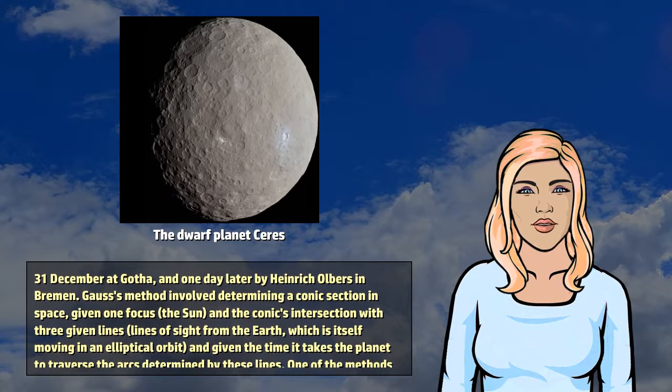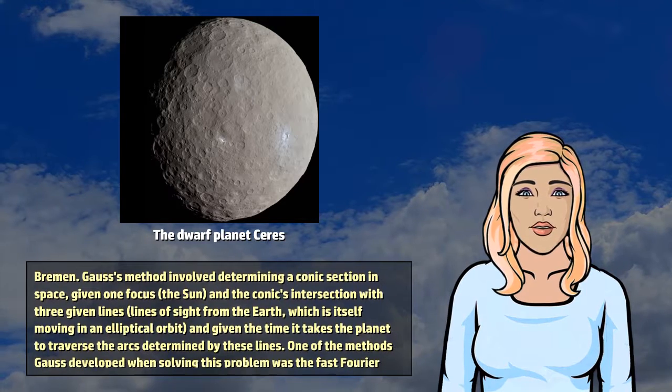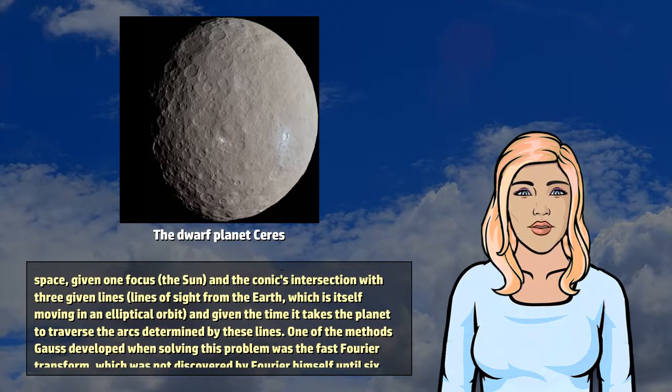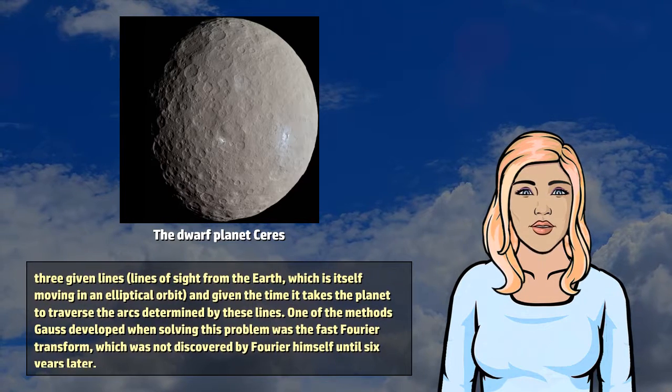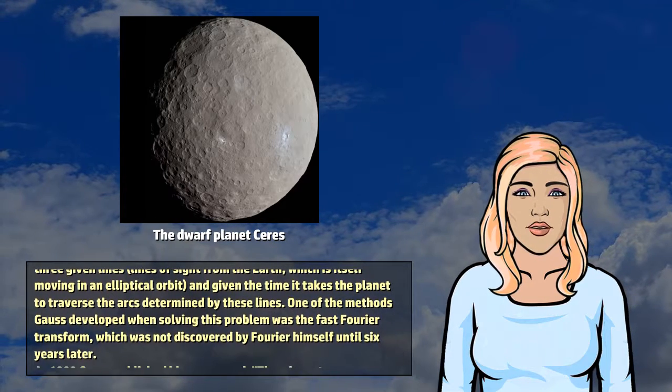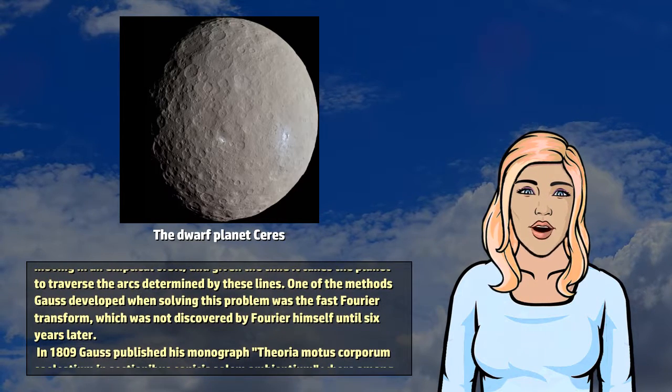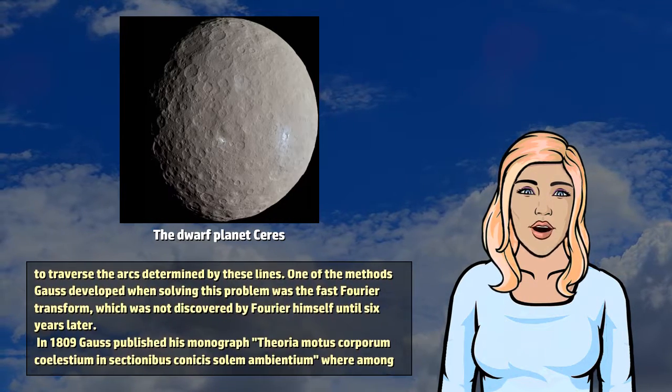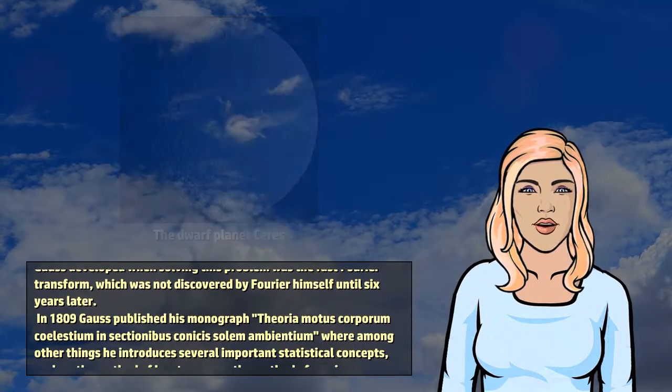Gauss's method involved determining a conic section in space, given one focus, the Sun, and the conic's intersection with three given lines, lines of sight from the Earth, which is itself moving in an elliptical orbit, and given the time it takes the planet to traverse the arcs determined by these lines. One of the methods Gauss developed when solving this problem was the fast Fourier transform, which was not discovered by Fourier himself until six years later.